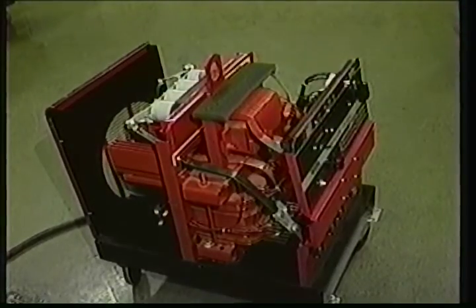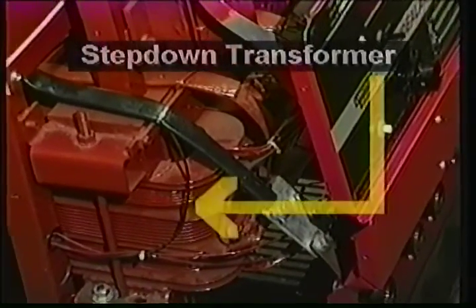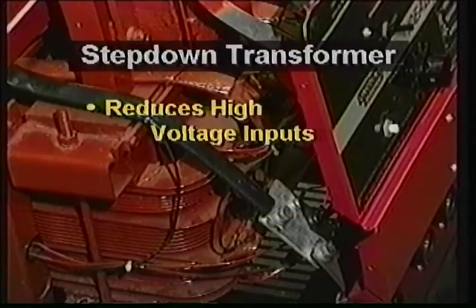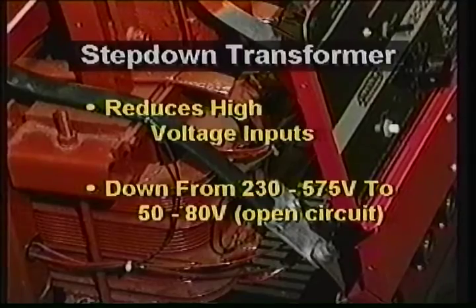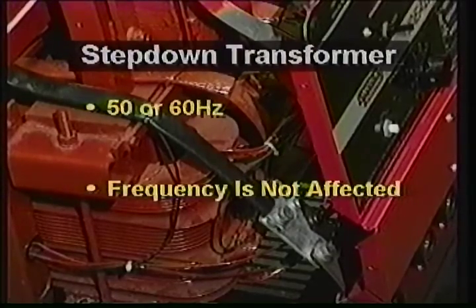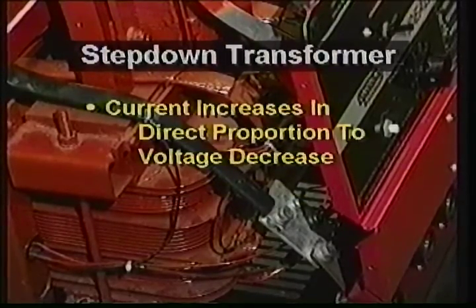To accomplish these transformations, a standard electric arc welder contains three main electrical components. First, the step-down transformer reduces the relatively high input voltages — usually ranging between 230 and 575 volts — down to about 50 to 80 open circuit volts before welding starts. The alternating current can have a frequency of 50 or 60 hertz; the transformer does not affect the frequency. The supply and output alternating current remain at 50 or 60 hertz, but the current, or amperage, increases in direct proportion to the voltage reduction.